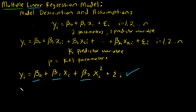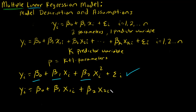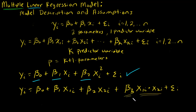Another type of model you might see is y_i equals beta naught plus beta_1 times x1_i plus beta_2 times x2_i, and then you include an x1_i times x2_i term. This is called an interaction term. I see multiplication, so once again I might think this isn't linear, but if I look at my betas, I'm still linear in beta. So this is a linear regression model.